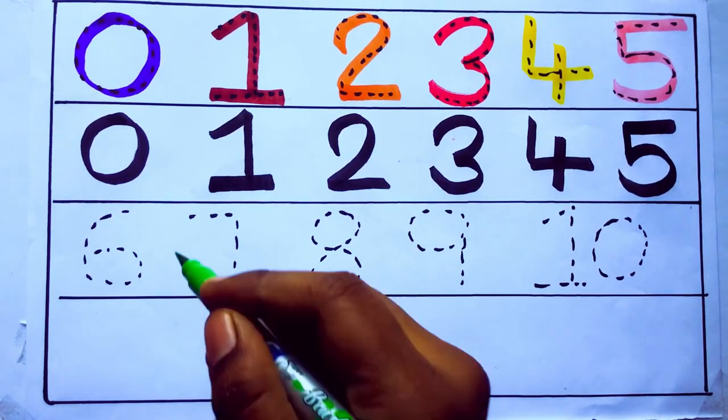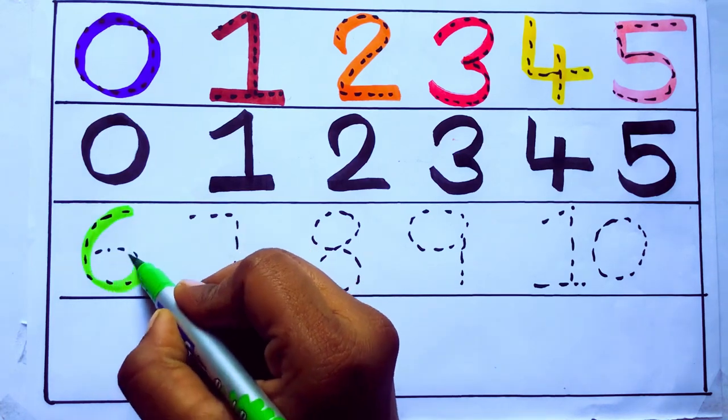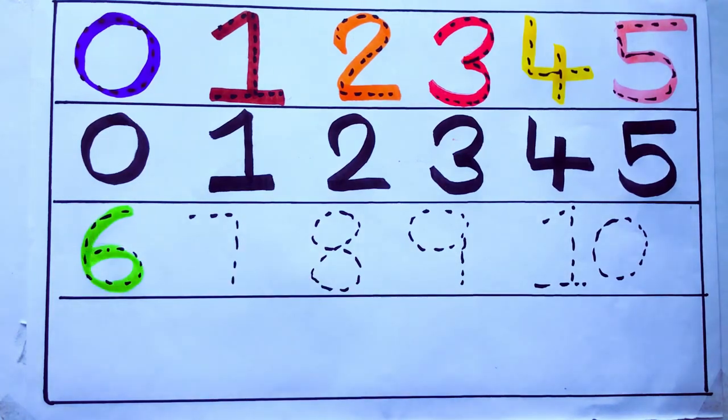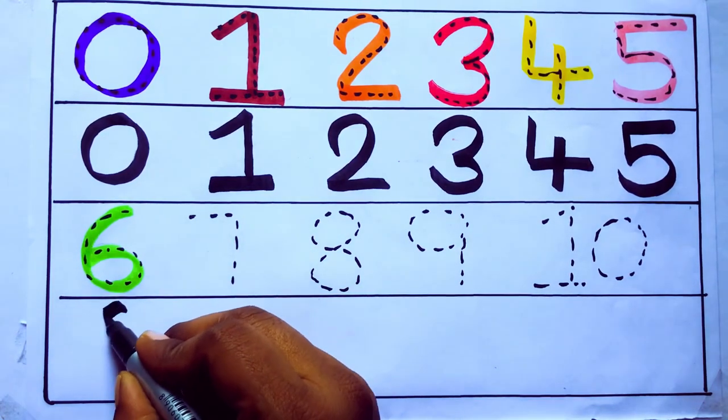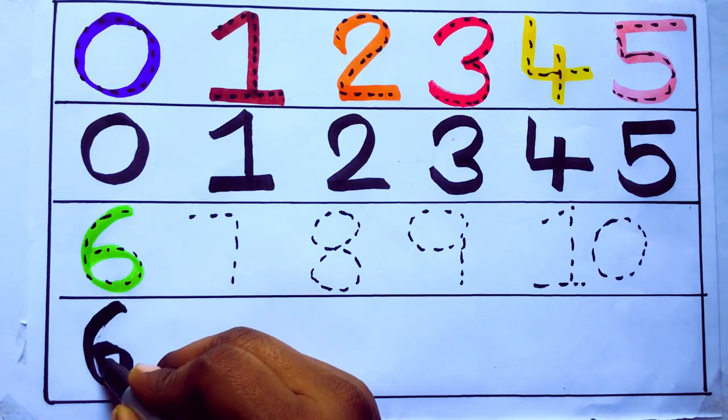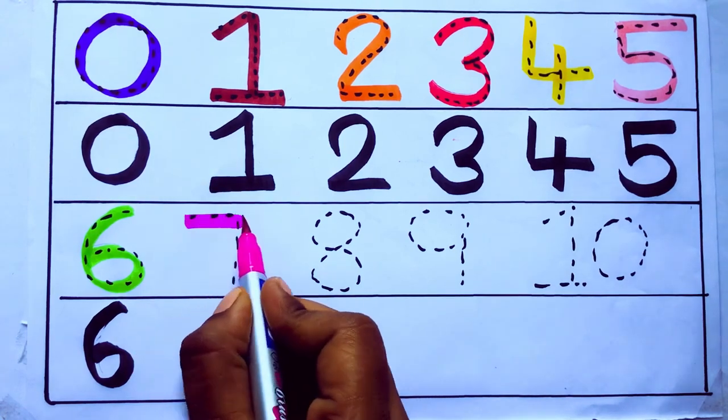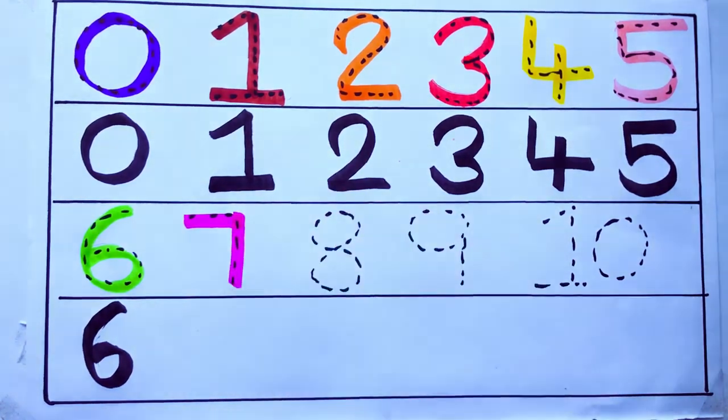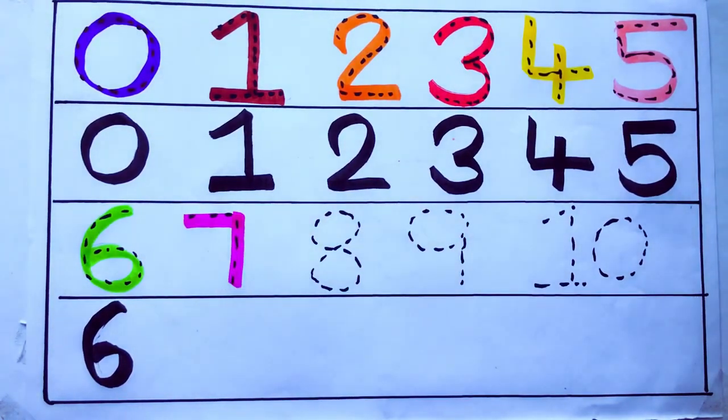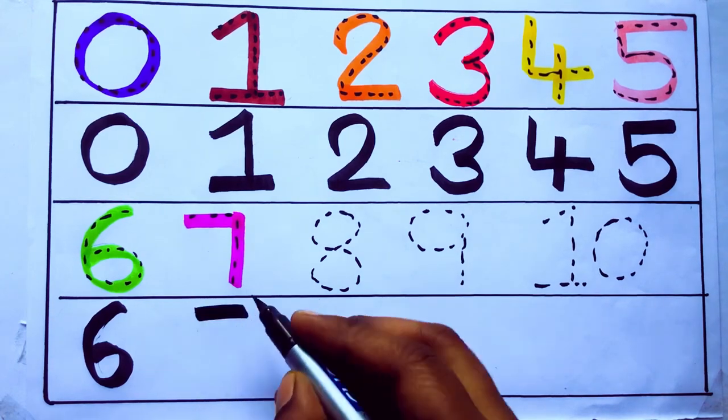Green color 6 S, I, X, 6. Number 6. Pink color 7 S, E, V, E, N, 7. Number 7.